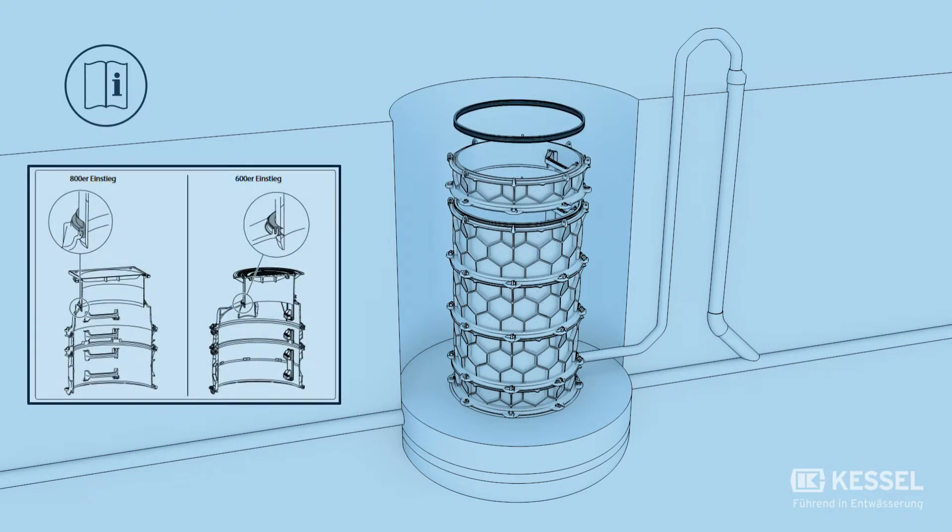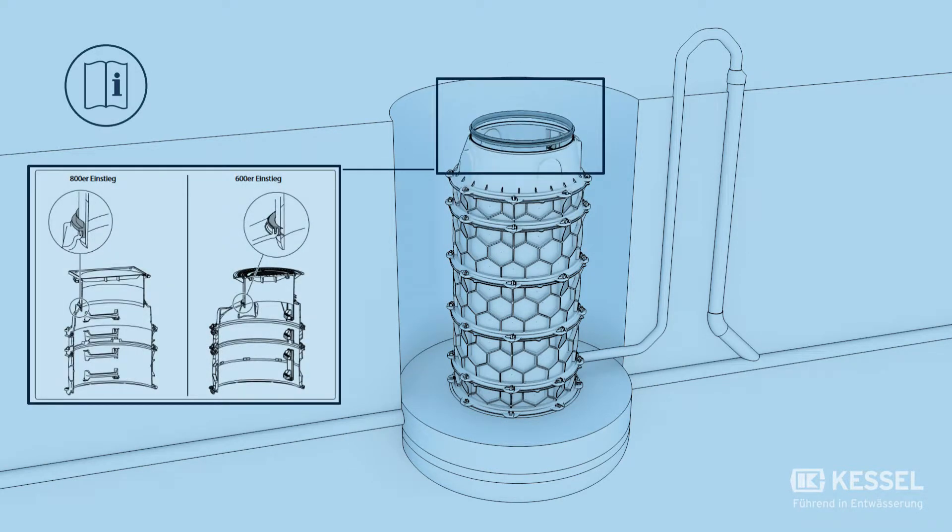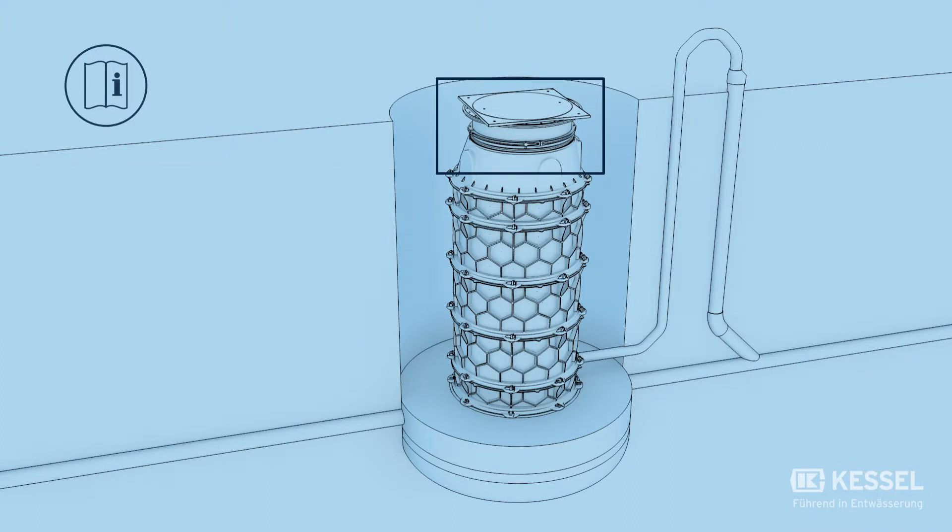Make sure the top section seal is in the correct position. We install the clamping rings for securing the top section in accordance with the installation and operating manual.